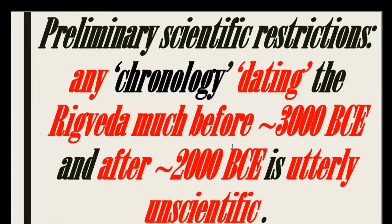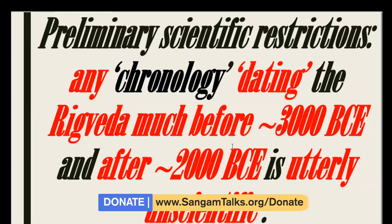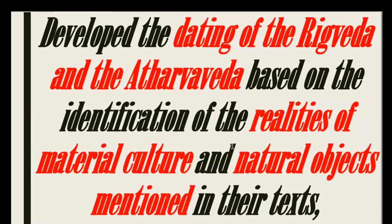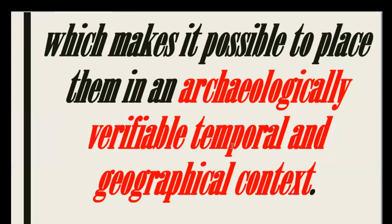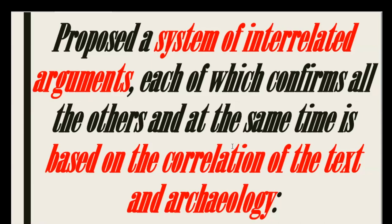I conclude that any chronology dating the Rig Veda much before circa 3000 BCE or after circa 2000 BCE is utterly unserious. I have developed the dating of the Rig Veda based on the identification of realities of material culture and natural objects mentioned in the texts, which makes it possible to place them in an archaeologically verifiable temporal and geographical context. I have proposed a system of about 40 interrelated arguments, each of which confirms all of the others and is based on the correlation of text and archaeology.